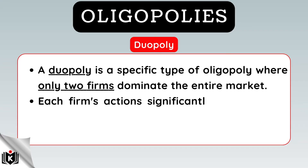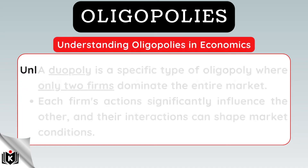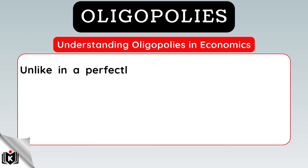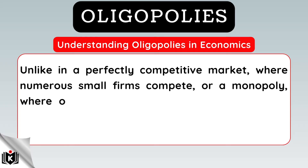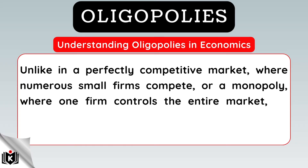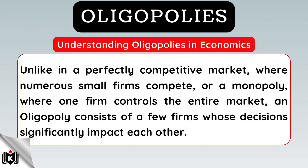Each firm's actions significantly influence the other, and their interactions can shape market conditions. Unlike in a perfectly competitive market where numerous small firms compete, or a monopoly where one firm controls the entire market, an oligopoly consists of a few firms whose decisions significantly impact each other.